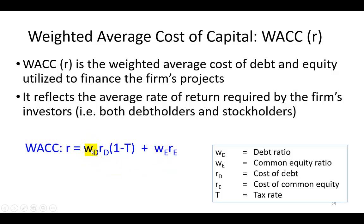WD represents the debt ratio, and WE represents the equity ratio. And the effective cost of debt to a firm is the after-tax cost of debt, where RD, the cost of debt, is multiplied by 1 minus the corporate tax rate, remembering that interest paid on debt is tax deductible.